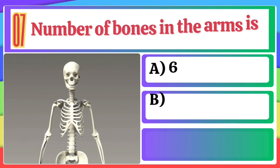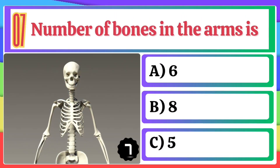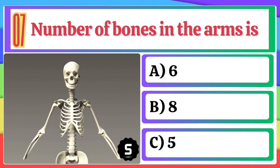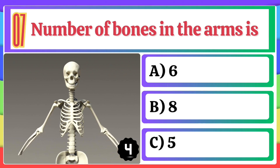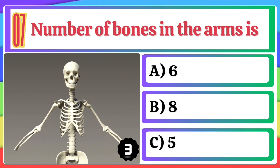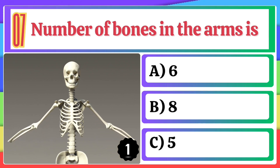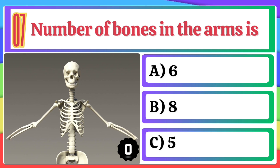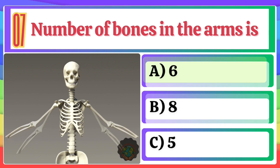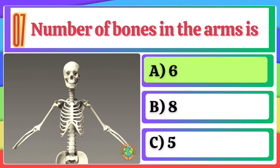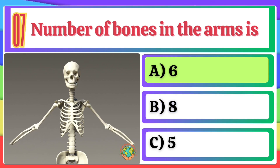Number of bones in the arms is: A) 6, B) 8, C) 5. The correct option is A, 6.